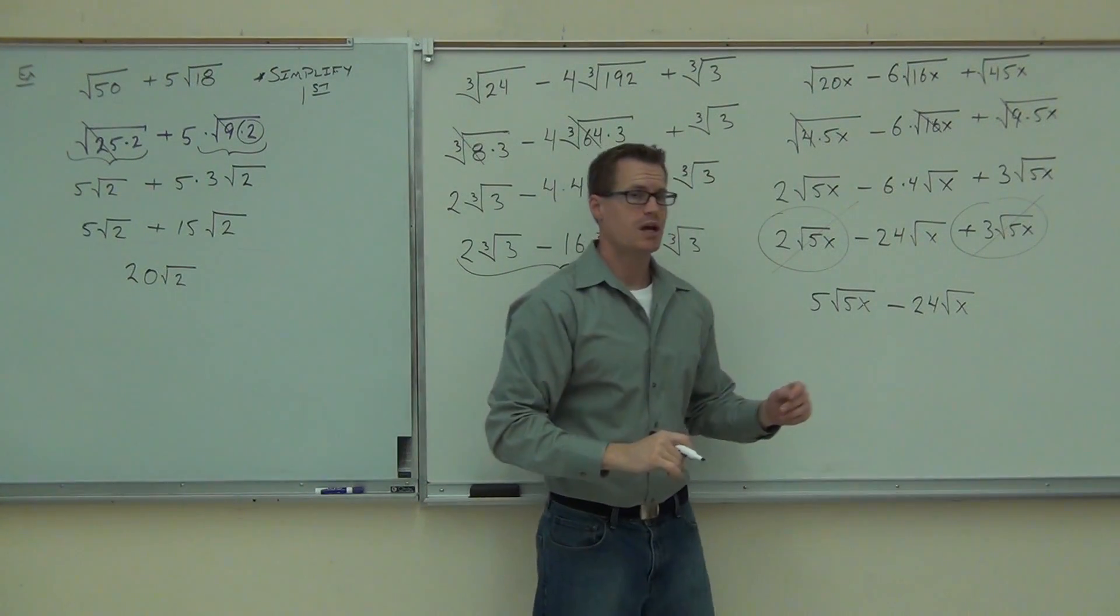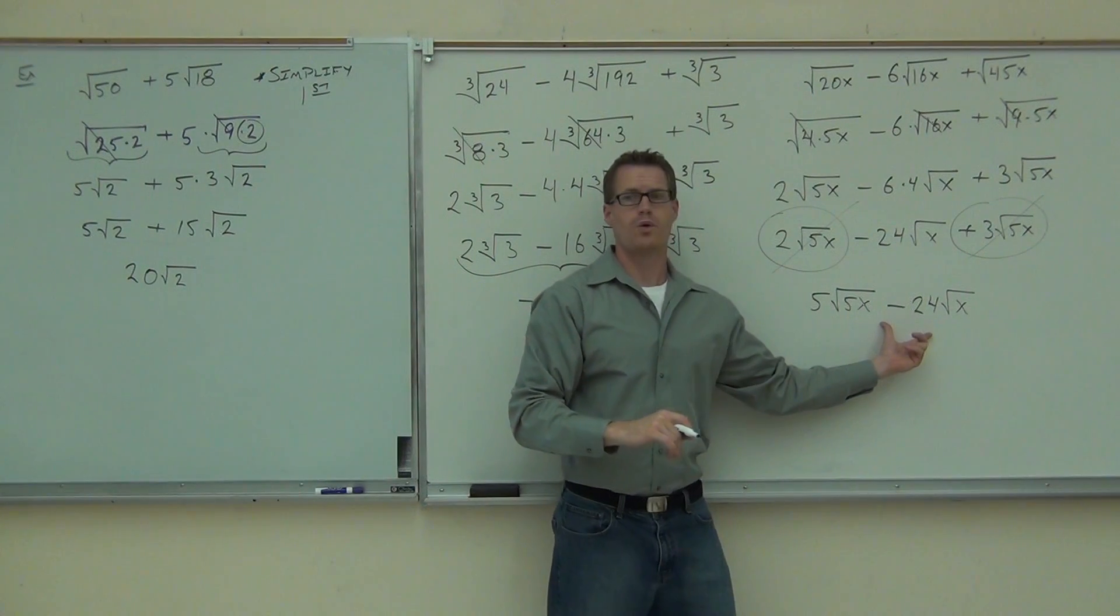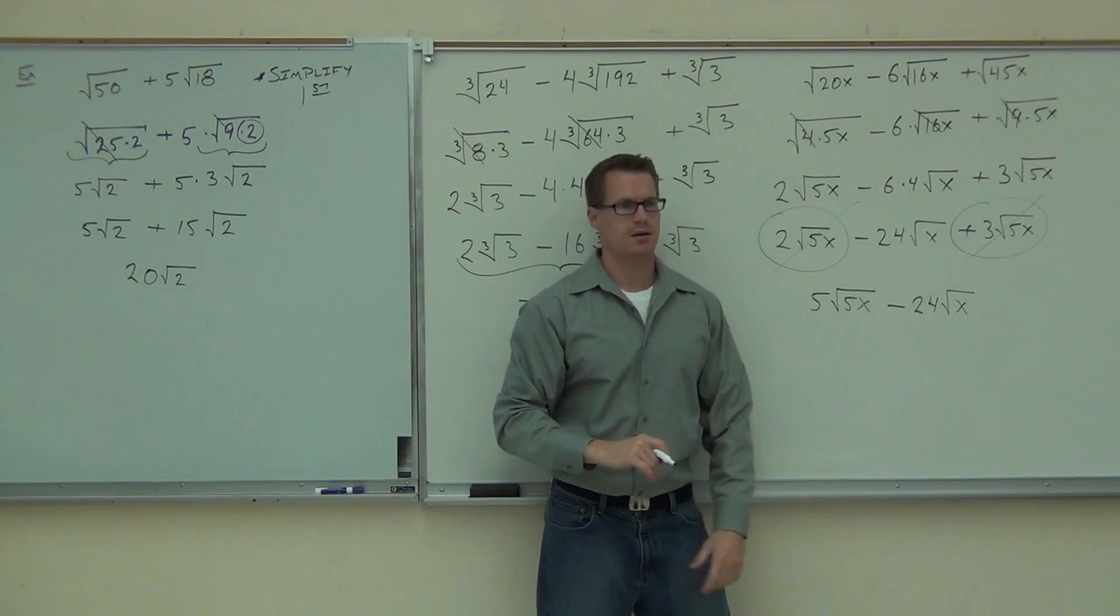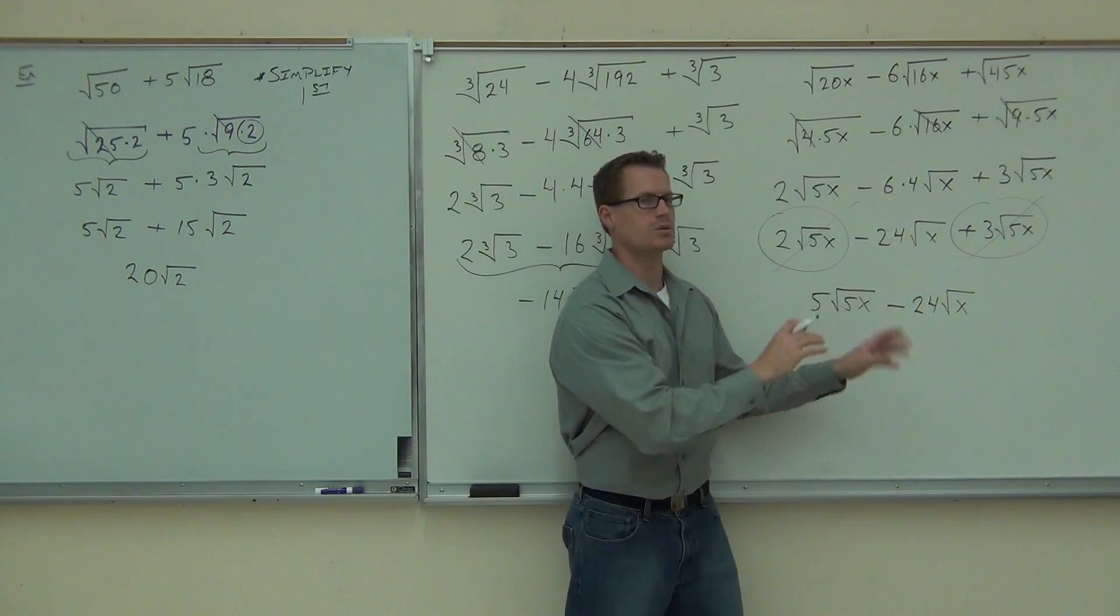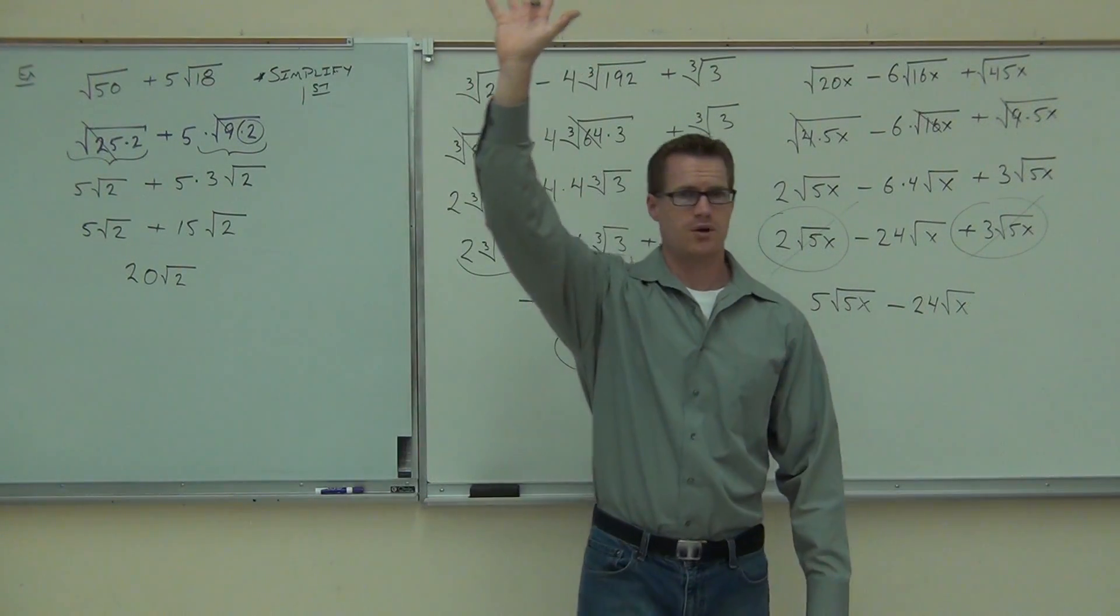So we have a 2 root 5x, we've got a 3 root 5x. How many root 5x do I have? 5 root 5x. 5. That takes care of these ones. Then at the back end, I still have a minus 24 root x. Hey, one question. Can I combine these and get like negative 19 square root of 4x? No. You can't. You can't do that with like terms. You can't do it with like radicals. This is as much as you can do.